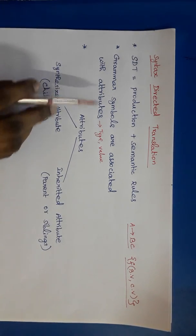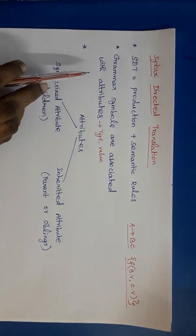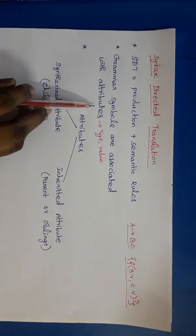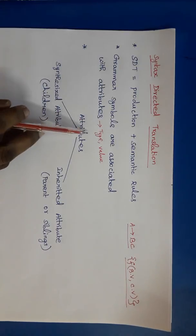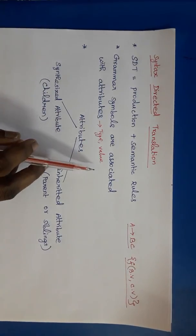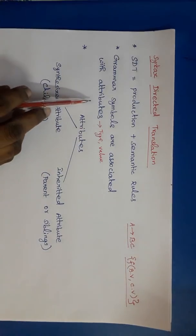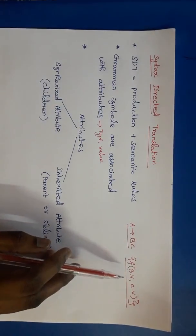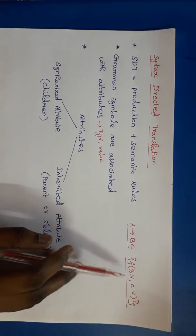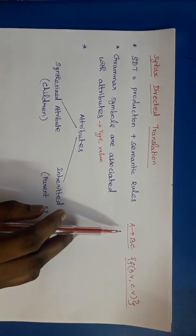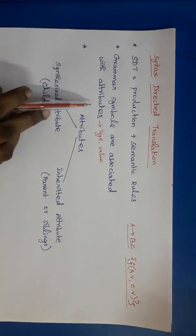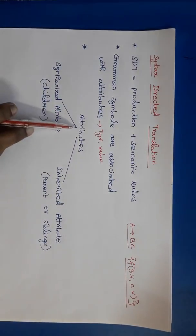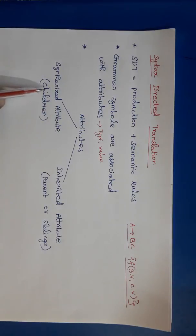The grammar symbols normally consist of some attributes. The attributes may be type, value, any integer number, or anything. These attributes can be evaluated with the help of the semantic actions associated with the grammar productions. The attributes may be synthesized attribute or inherited attribute.